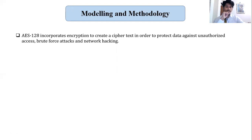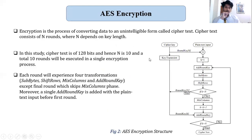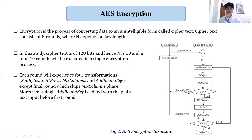AES-128 incorporates encryption to create a ciphertext in order to protect data from various breaches. This unreadable ciphertext goes through a decryption process to convert into readable plaintext output. In encryption, we convert the data into ciphertext. This ciphertext consists of n rounds which depends on the key length. For AES-128, we have 10 of these rounds. Each round goes through the whole AES encryption process consisting of four transformations: AddRoundKey, SubBytes, ShiftRows, and MixColumns. The MixColumns is skipped in the final round.